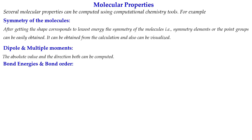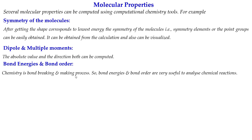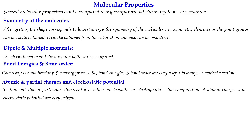For chemical reactions, bond energies and bond order are very important, because chemistry is essentially about bond breaking and bond making. Bond energy and bond order information are very useful for analyzing chemical reactions and can be computed using computational chemistry. Atomic and partial charges and electrostatic potentials can also be calculated — for example, to determine whether a particular atom or center is nucleophilic or electrophilic. Electrostatic potentials are also helpful to find out whether a molecule is hydrophobic or hydrophilic, or which zone of a molecule is hydrophilic or hydrophobic.